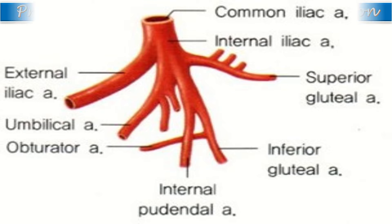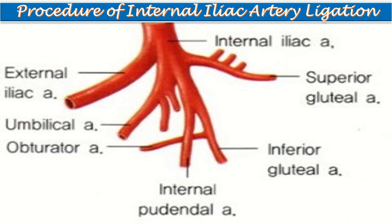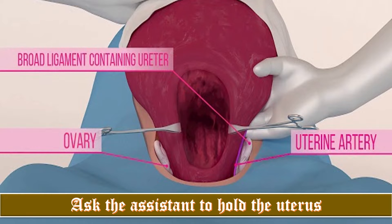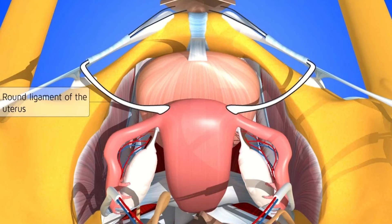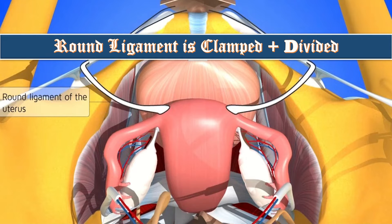Now let us explain the procedure of internal iliac artery ligation. First, ask the assistant to hold the uterus after exteriorizing it from the abdominal cavity and tilt it to the other side to apply a stitch on one side. The mid portion of the round ligament is clamped and divided between two forceps to enter into the retroperitoneal space.